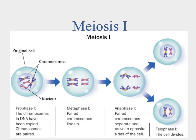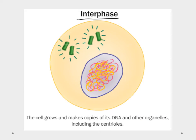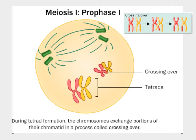Meiosis reduces a cell from 2n to 1n. Unlike mitosis, meiosis has two divisions. Meiosis I looks much like mitosis: prophase has chromosomes thicken and the nucleus dissolve; metaphase lines chromosomes on the middle plate; anaphase separates them; and telophase with cytokinesis forms two cells. A key event in prophase 1 is crossing over — chromosomes line up and exchange genetic material between the mother and father strands, creating a blend that explains family resemblance and sibling differences.